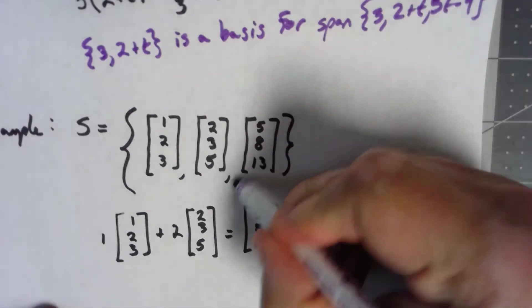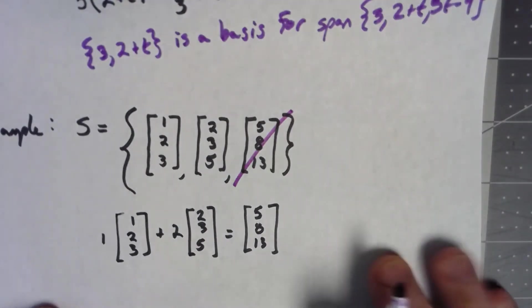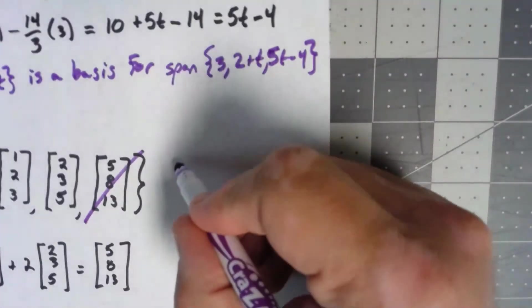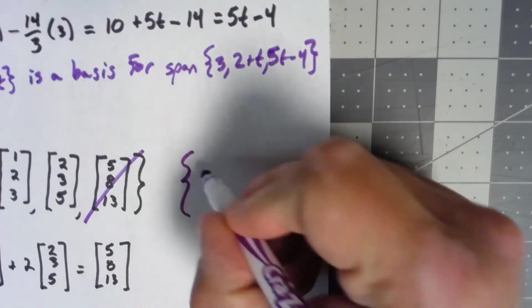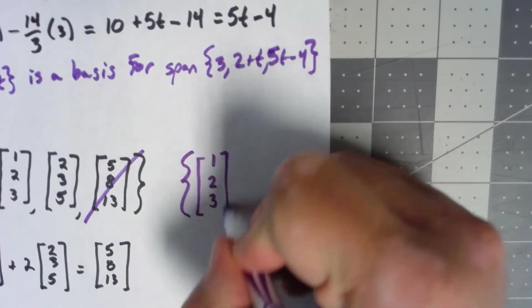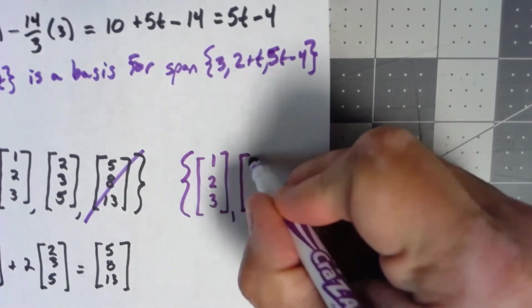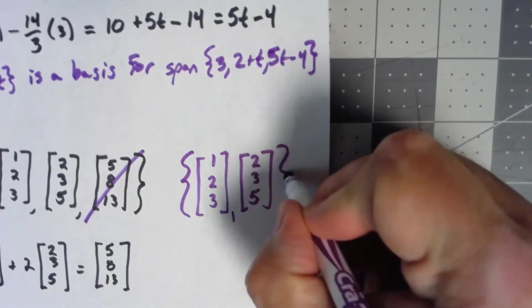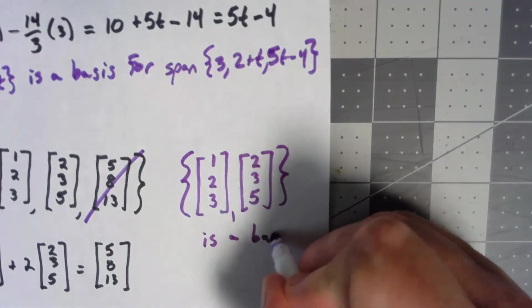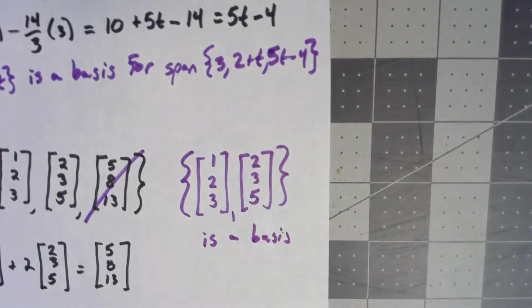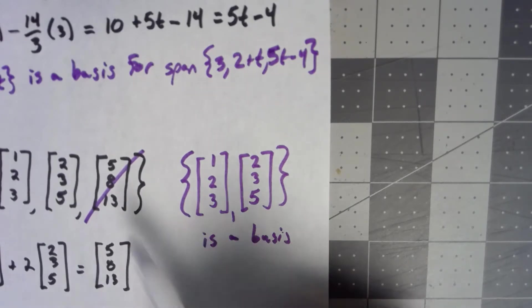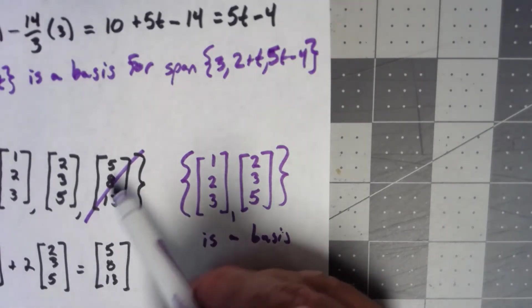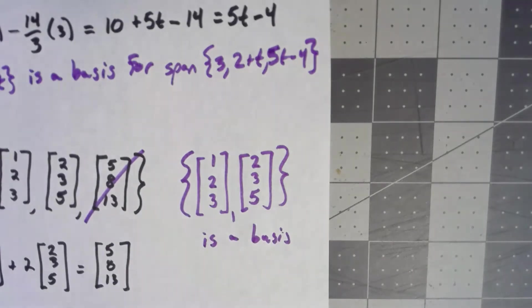Because it's a linear combination of the first two, by removing it, the remaining vectors, which we know are linearly independent because they're not multiples of each other, the set {(1, 2, 3), (2, 3, 5)} is a basis for the subspace of R3 spanned by the original three vectors. Again, this third vector wasn't adding anything new. It didn't give us anything that we couldn't create out of just these two vectors.